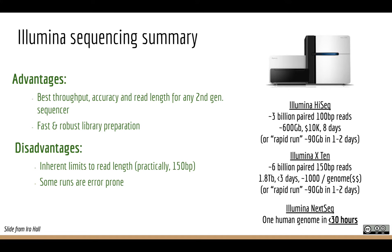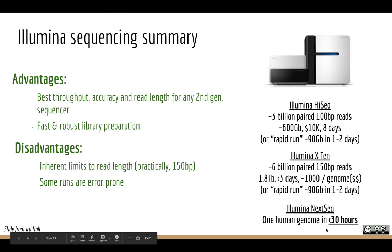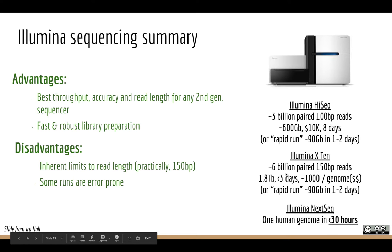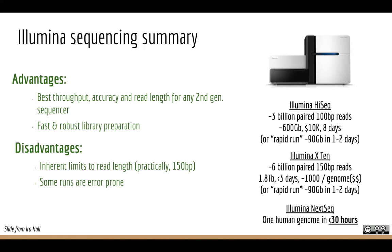Illumina bought Solexa and every year releases new instruments — NextSeq, NovaSeq, and others I've lost track of. My understanding is we can now sequence one human genome in under 24 hours, with throughput of something like 10 to 12 billion individual sequences per run — so on those flow cells there are roughly 12 billion molecules.